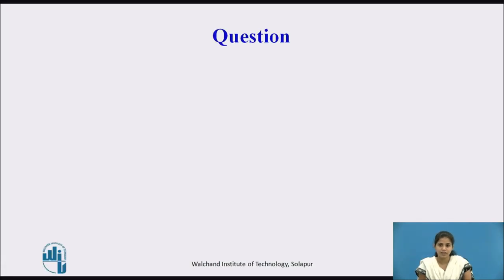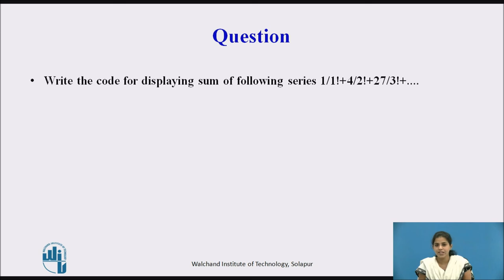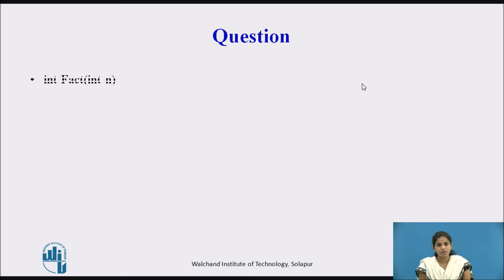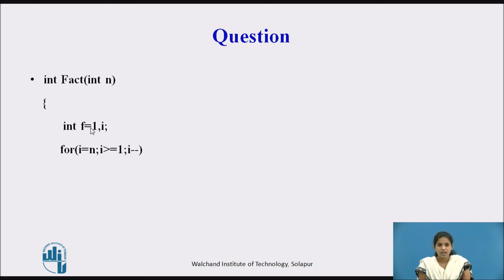Now, can you implement the code to display the sum of the following series? Pause the video and think about it. The series is 1/1! + 4/2! + 27/3! and so on. Here we calculate the factorial using the 'fact' function taking one integer parameter. We declare a variable f initialized to 1, use a for loop with i initialized to n, condition i >= 1, and i--, computing f = f*i inside the loop, then return f to the calling function.